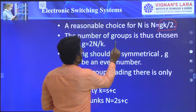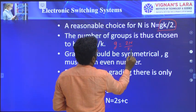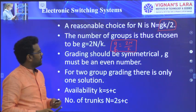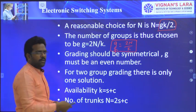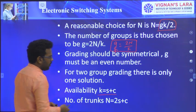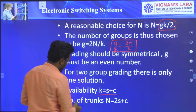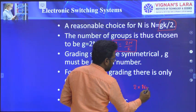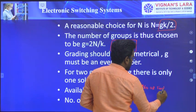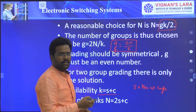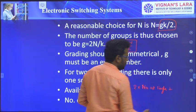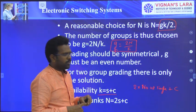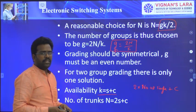For two groups, there is only one solution. That is: availability K = S + C, where S is singles and C is commons. And the number of trunks N = 2S + C, because there are two groups — 2 times the number of singles in each group plus the number of commons C. This gives the total number of trunks for the case of two groups.